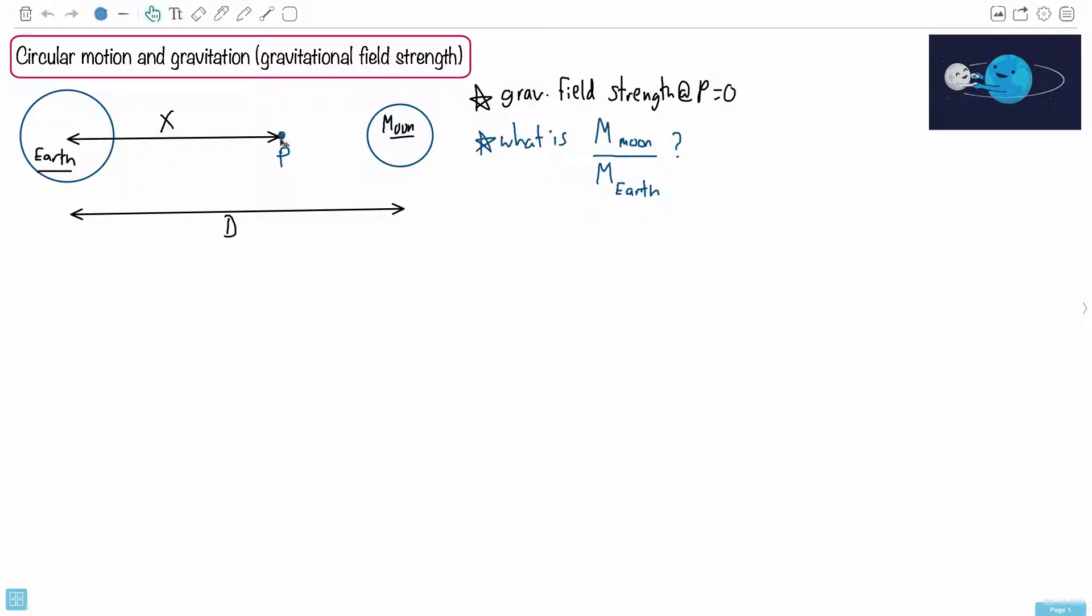And they tell you something. There's some point P, and they tell you something special. They say the gravitational field strength at P is zero. And they say, what's the ratio of the mass of the Moon over the mass of the Earth? Given that the distance from the center of the Earth to P is called X, and the distance from the center of the Earth to the center of the Moon is called D.